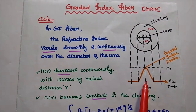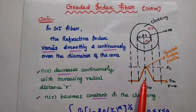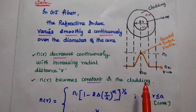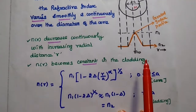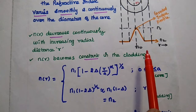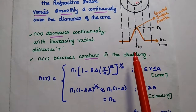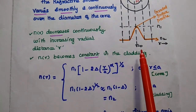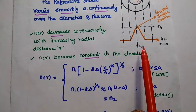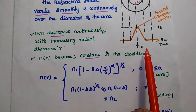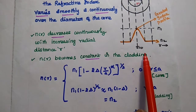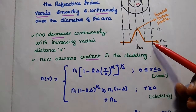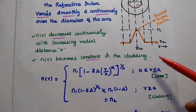Here R equal to 0 represents the core axis of the fiber. The N(r) value, that is the graded index profile, decreases continuously with increasing radial distance, but at the same time it becomes constant in the cladding.